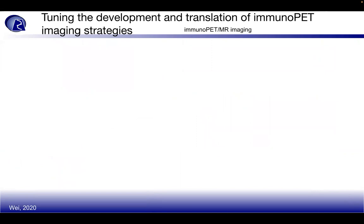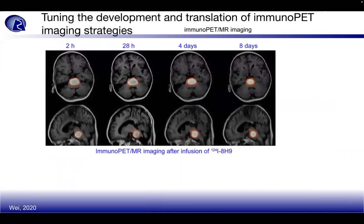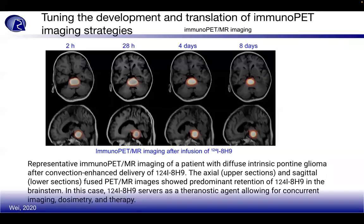For immunoPET MR imaging in a glioma, representative immunoPET/MR imaging of a patient with diffuse intrinsic pontine glioma after convection-enhanced delivery shows axial upper sections and sagittal lower sections as a fused PET/MR image demonstrating predominant retention in the brainstem. The theragnostic agent allows concurrent imagery, dosimetry, and therapy, imaged at two hours, 28 hours, four days, and eight days.